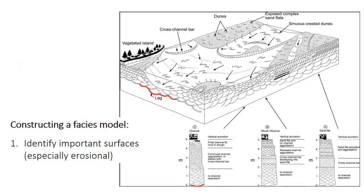When constructing a FACES model, the first step is to identify erosion surfaces, especially those within the sedimentary succession. That's really important because Walther's Law won't apply to FACES separated by significant erosion — even though one is on top of the other, they may not represent laterally adjacent depositional environments. In fluvial settings, erosional surfaces typically mark the base of any idealized succession of FACES because they mark the initiation of a new channel.